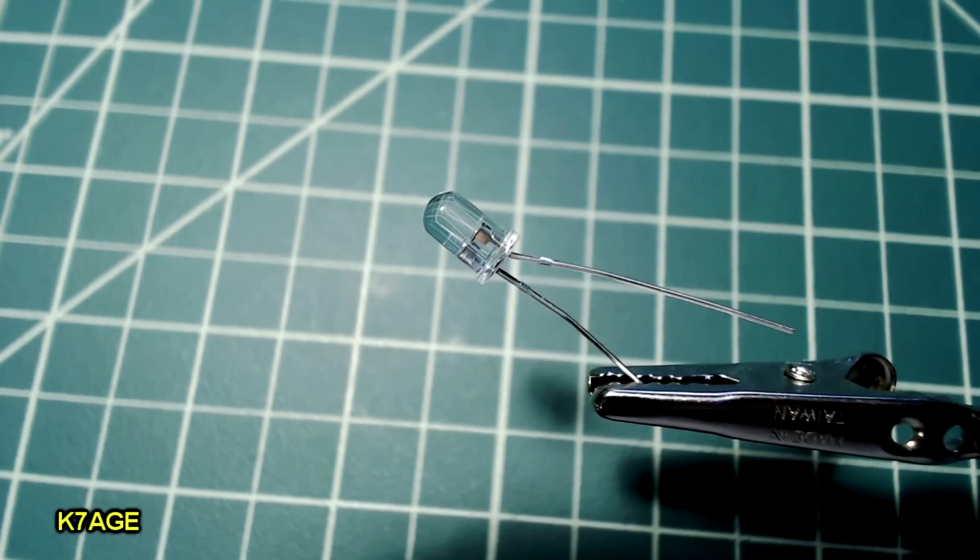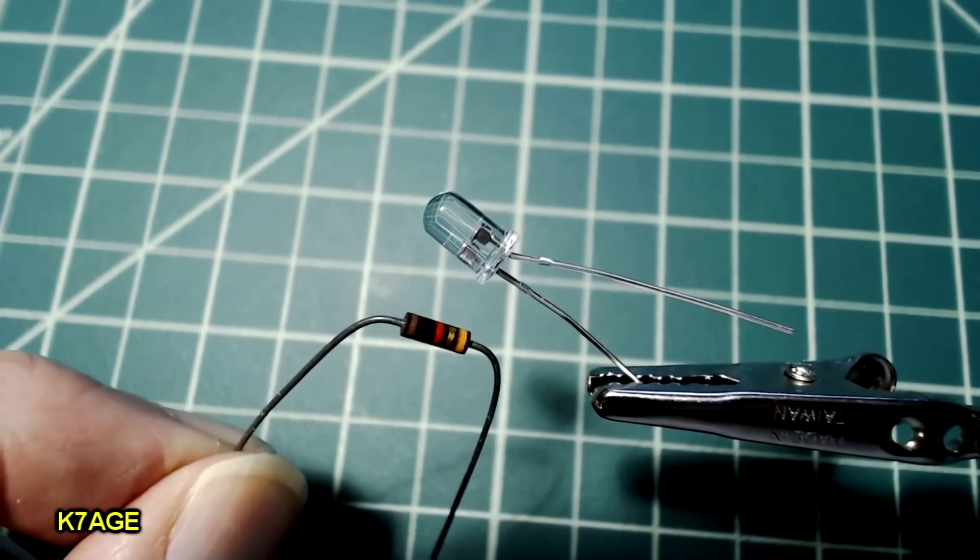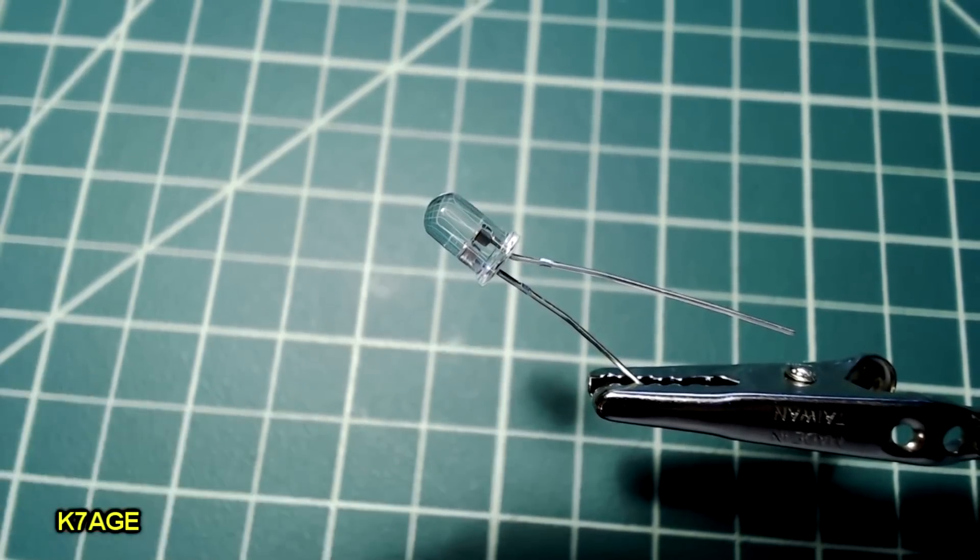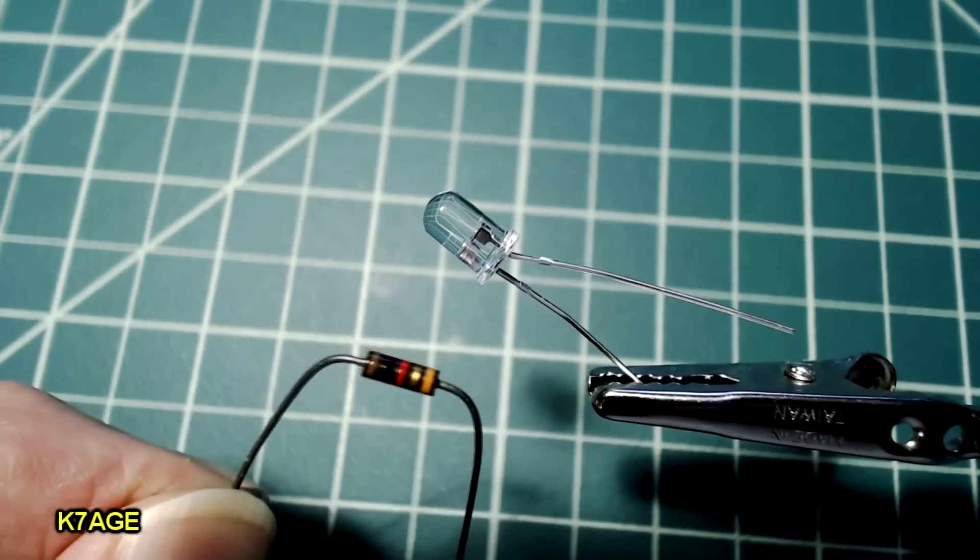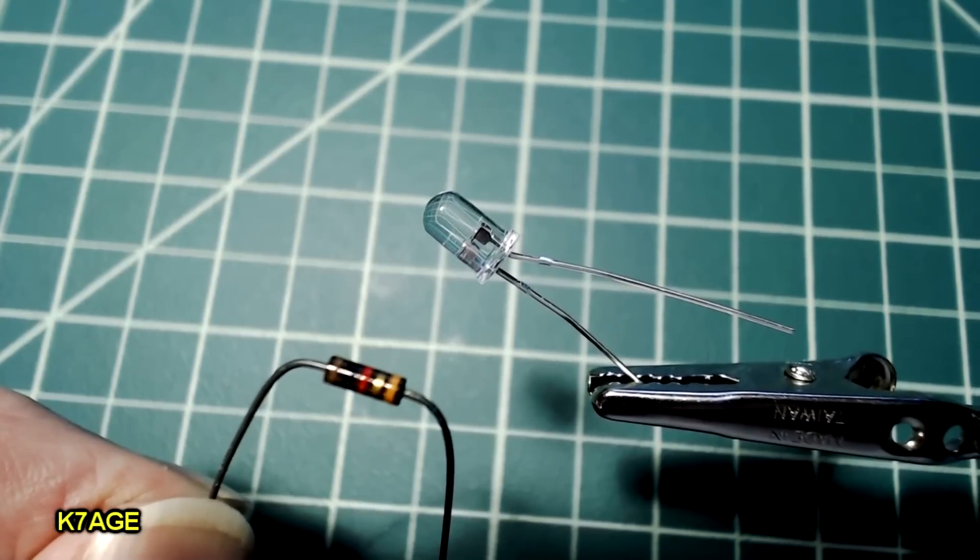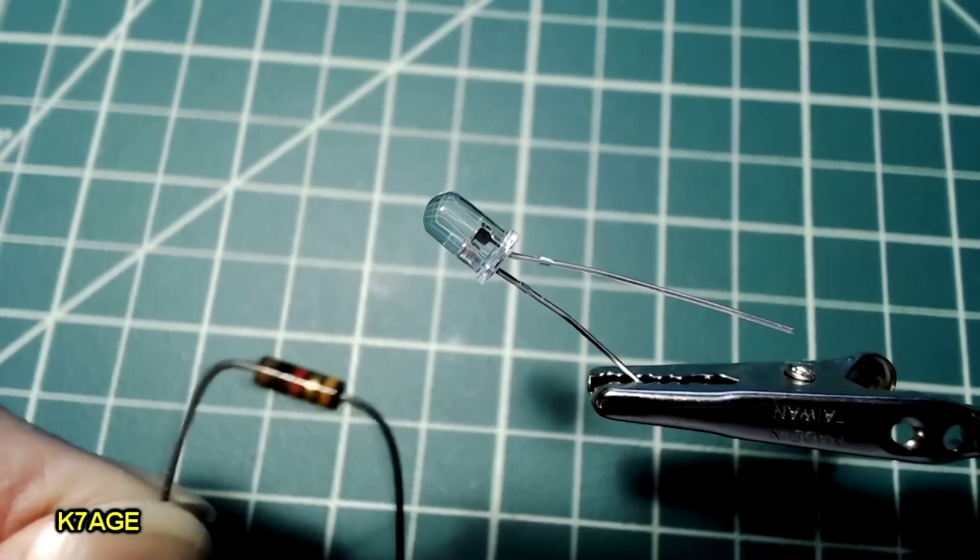So when you're using LEDs, you have to be a little careful. You just cannot typically connect them up directly to a power source. They'll draw a large amount of current and burn themselves out. So typically you need to use a current limiting resistor in series with the LED. Now some LEDs have the current limiting resistor built in. This one does not. So we'll be using an external resistor. And we'll check the datasheet to see how much current or what the maximum current is so we can scale the resistor.